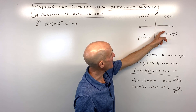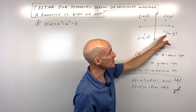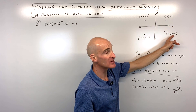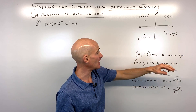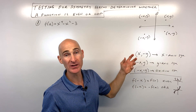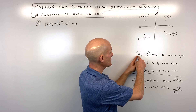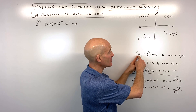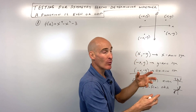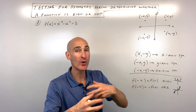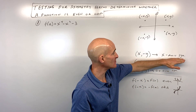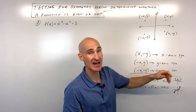If we're reflecting over the x-axis, the x coordinate stays the same but the y coordinate changes sign. So to test for x-axis symmetry, we keep x the same but replace y with negative y. When we simplify that equation, if we get the original equation back, it's symmetric about the x-axis.